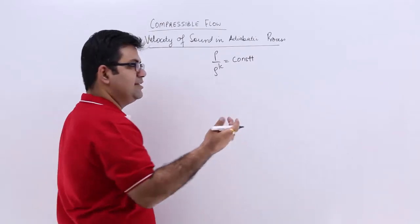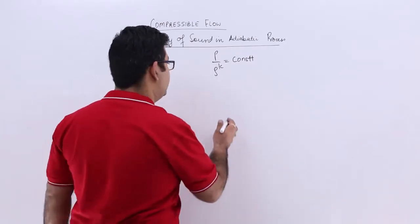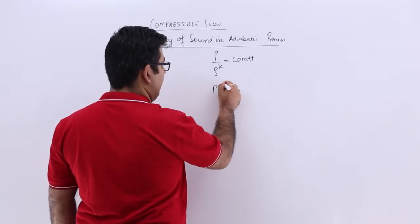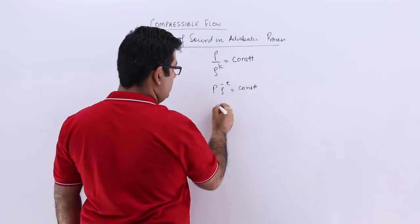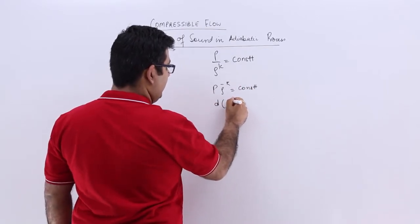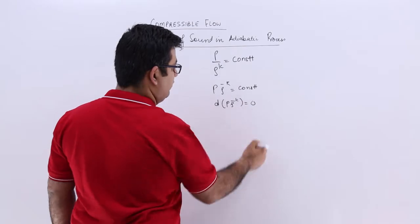It is very similar to what we did in the isothermal process case in the previous video. You will have this. Let us differentiate it. You will have d of p times rho to the power minus k equals 0.